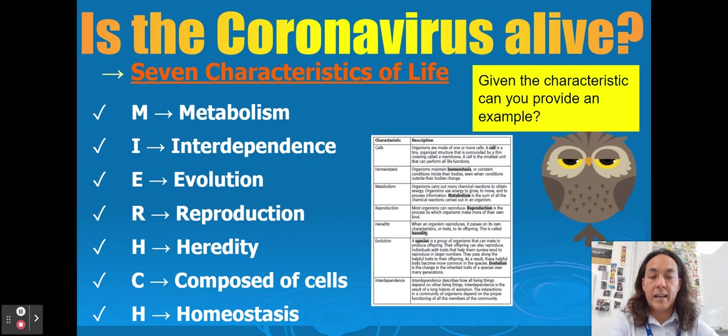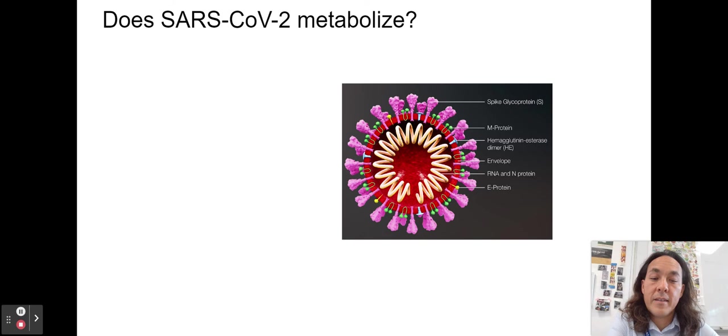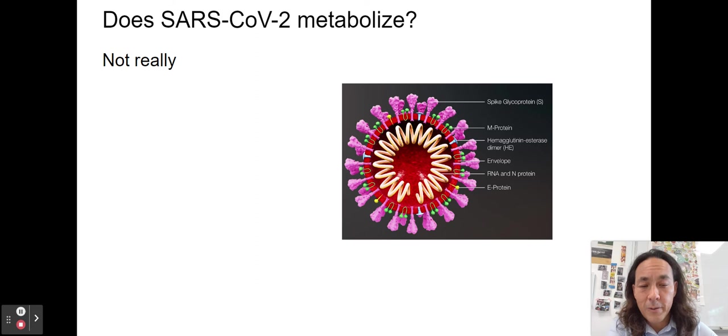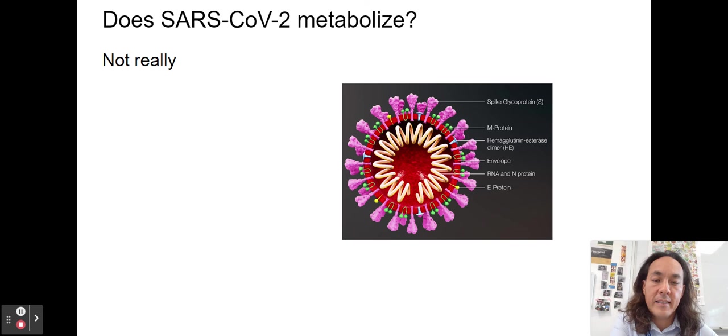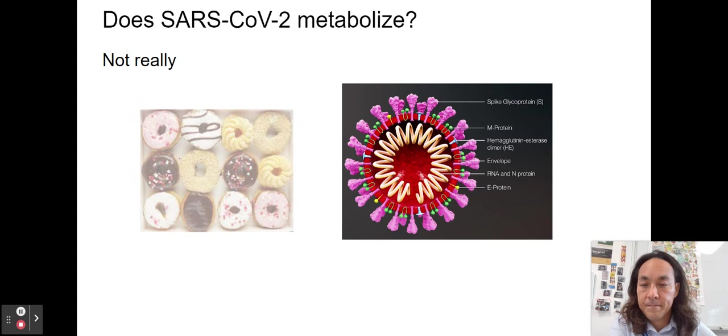Walter Cannon, a Harvard physician in World War I, went to the front lines to save soldiers dying from shock and blood being too acidic. He coined the term homeostasis — getting blood pH back to normal so they could survive and get life-saving surgery. Does the coronavirus exhibit metabolism? Not really. It's a borrower — it doesn't process or make its own energy. It doesn't have chloroplasts or mitochondria. It just takes all of your stuff.